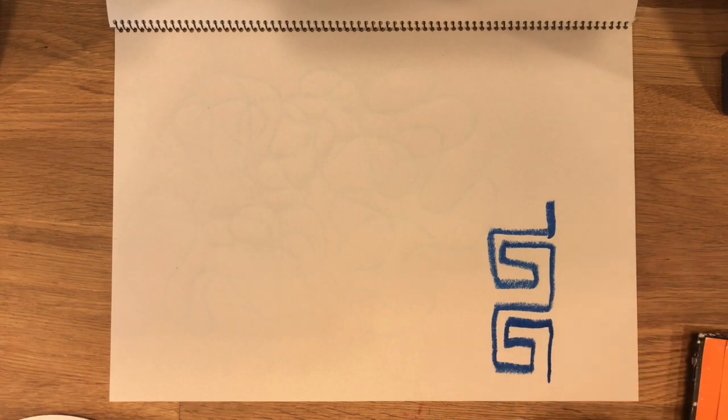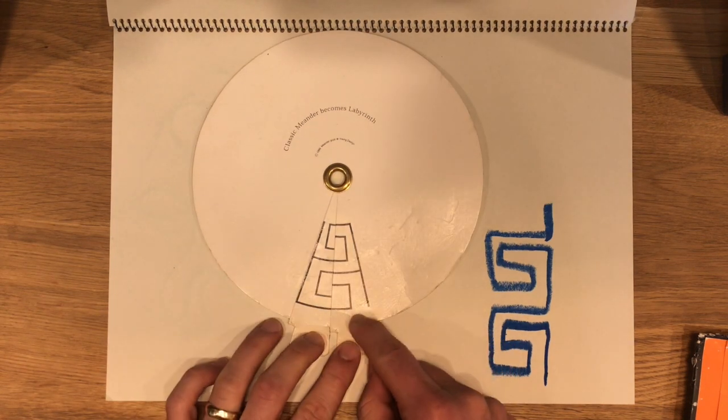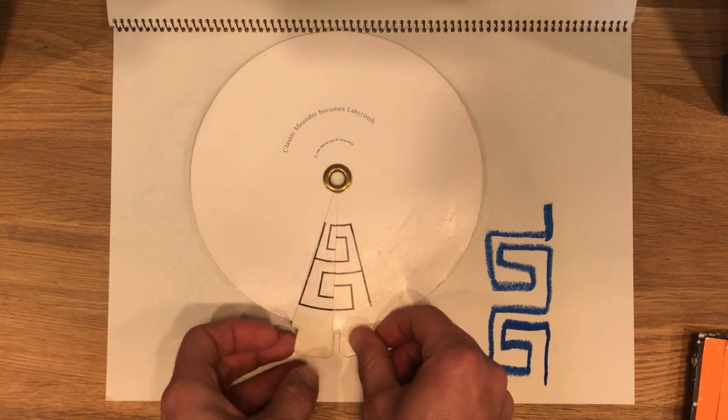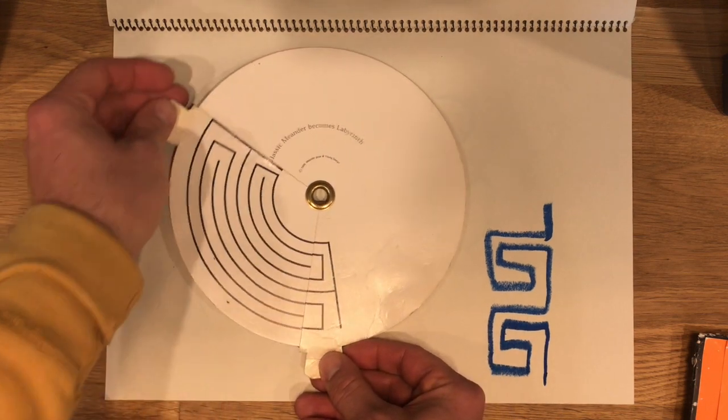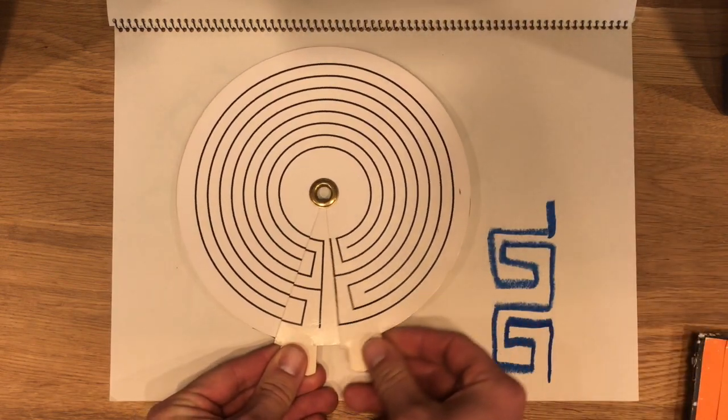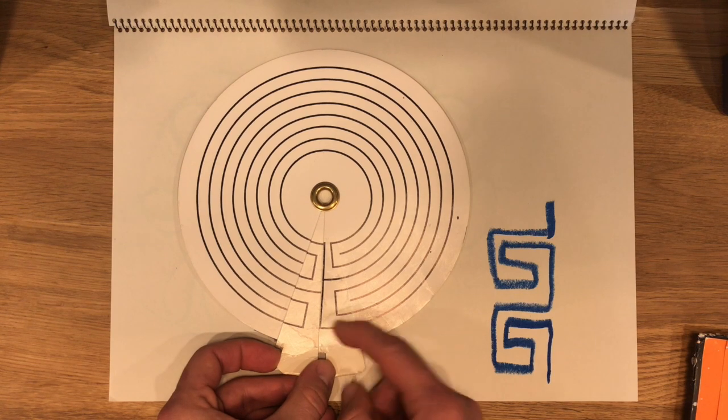And what's fascinating is that the seventh circuit classical labyrinth is actually two meanders that are wrapped around a center in a circle to create the seventh circuit classical labyrinth.